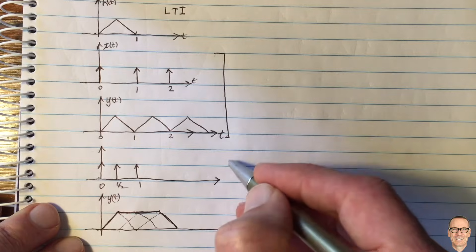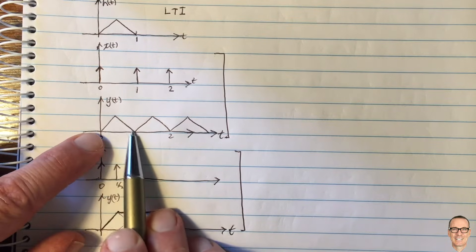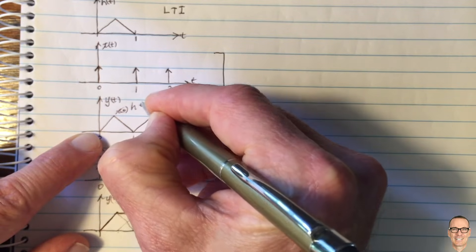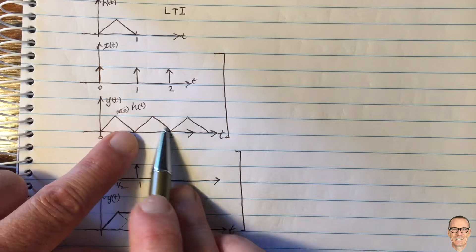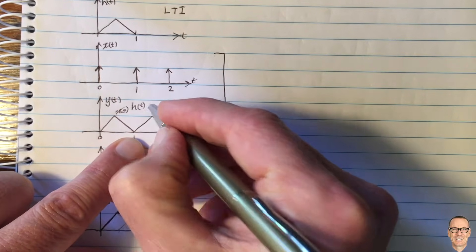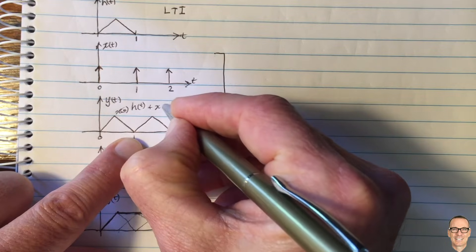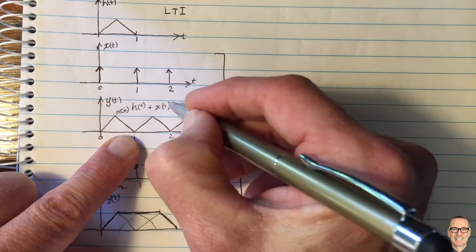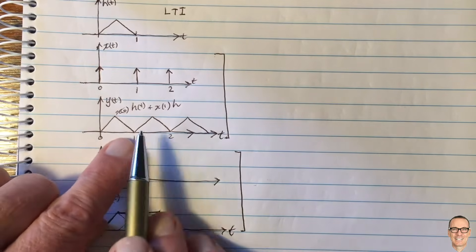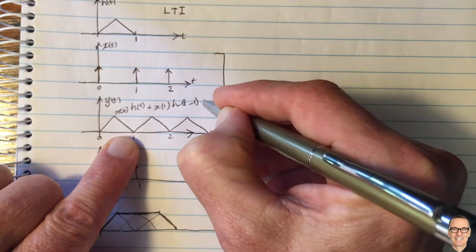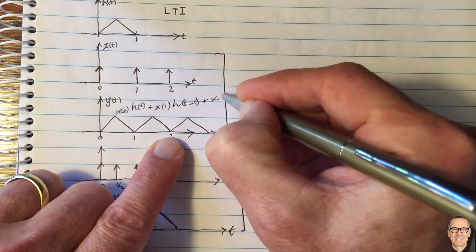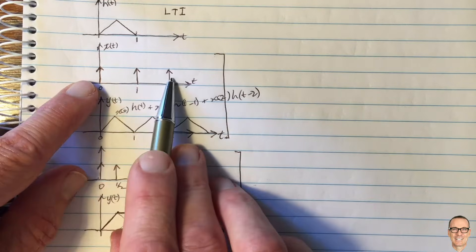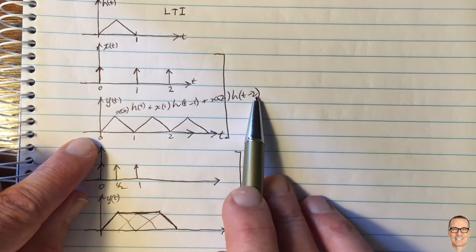Let me write down the components of this system. This waveform is x(0) times h(t) — that's what that first triangle is. Then we add, because it's linear time invariant, the second triangle which is x(1) — the height of x at time 1 — multiplied by the impulse response shifted in time by 1, so that's h(t minus 1). Plus the third component which is x(2) times h(t minus 2). So these three components from three delta function inputs give us this result, expressed in this mathematics.